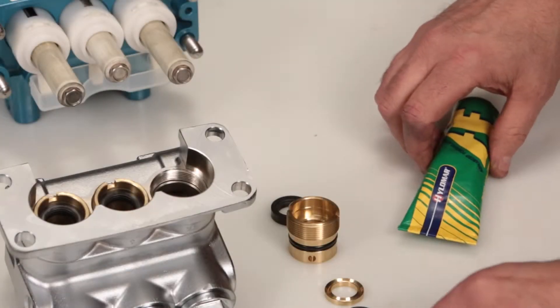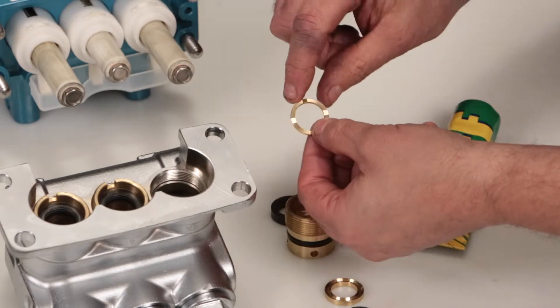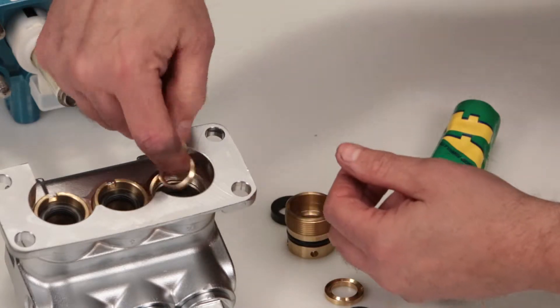To install the new seals, begin with the male adapter. There are four notches on one side. This is the side that goes down into the manifold.